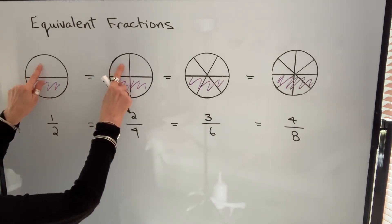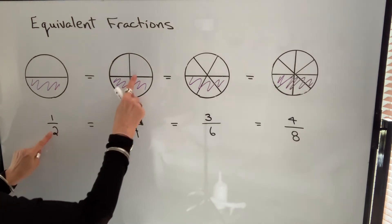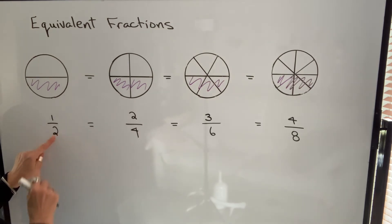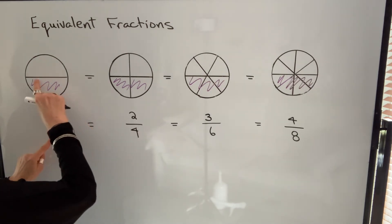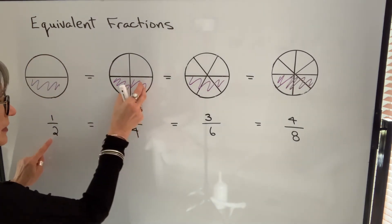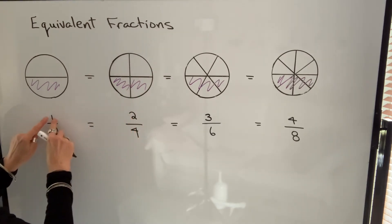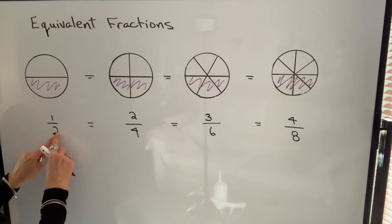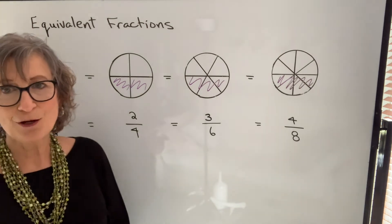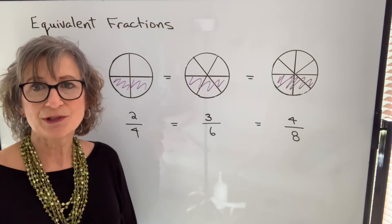If we take a look at these first two pies — this pie is split into two pieces, this pie is split into four pieces. Four is double two. The person only ate one piece of this pie, but they ate two pieces of this pie, but the pieces are smaller. Notice that the numerator is also double. So if you were to double the bottom and double the top, you would get two fourths — and that's what you're allowed to do with fractions. You're allowed to multiply the numerator and the denominator by the same thing.